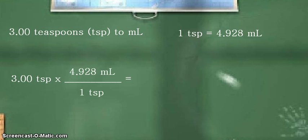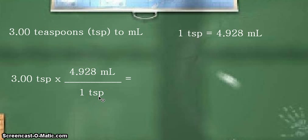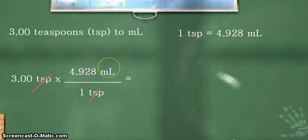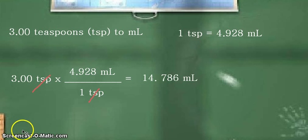So we'll write that down. We have now transformed our equivalent statement into the corresponding conversion factor so that we can see the proper cancellation of our unit. We have the unit teaspoons in the numerator of our given and teaspoons in the denominator, so we cross them out — that's being canceled out — and we are left with our desired unit, which is mL. The calculation gives us 14.786 mL.